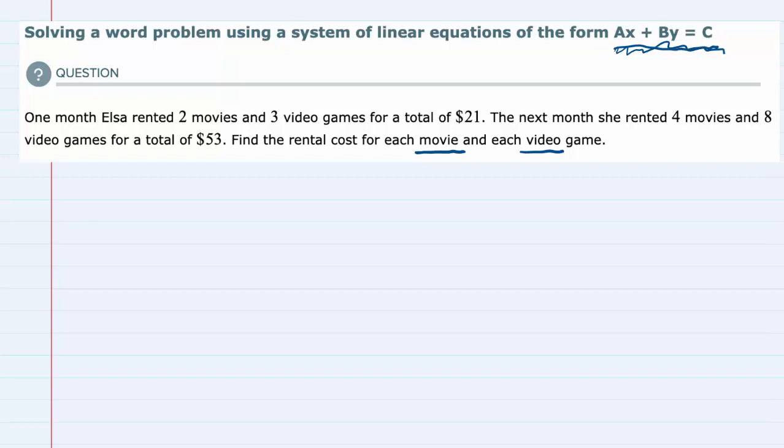Looking back at that first sentence, one month Elsa rented two movies and three video games for a total of $21. I'm going to set my variables at M, which is the number of movies rented, and V, the number of video games.